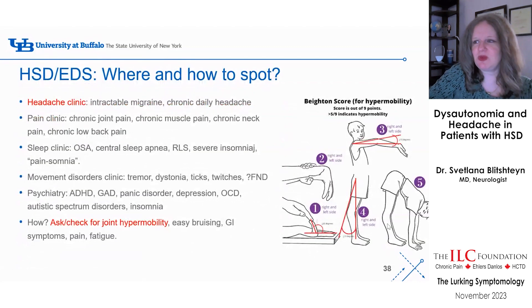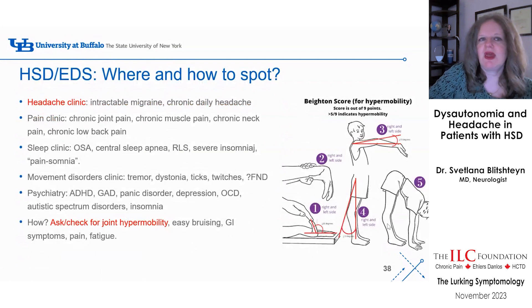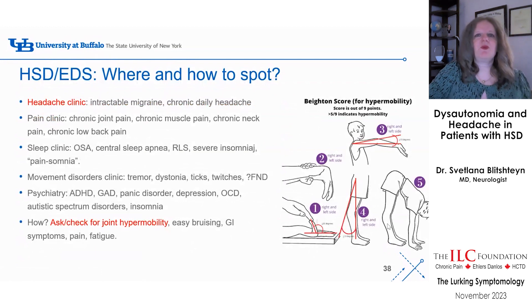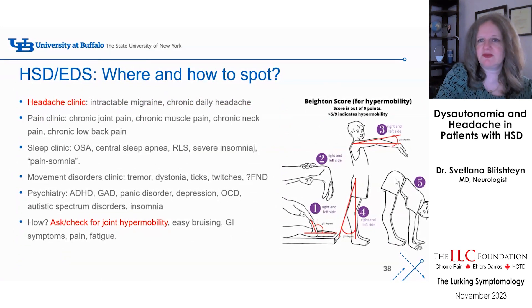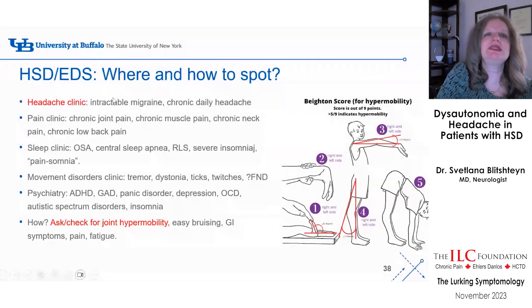The Beighton score is used for hypermobility — a score of five or greater out of nine indicates hypermobility. There is a predominance of hypermobility in headache clinics, pain clinics, and sleep clinics as well. I'm trying to work together with colleagues of all specialties to diagnose, treat, and not miss these patients.